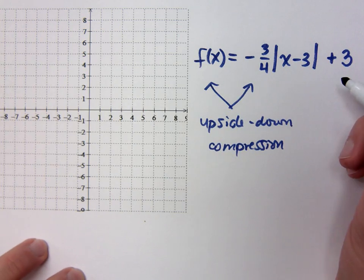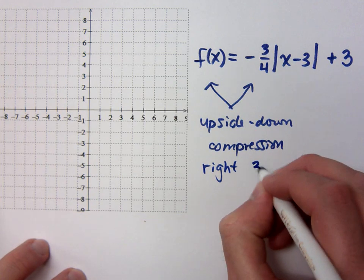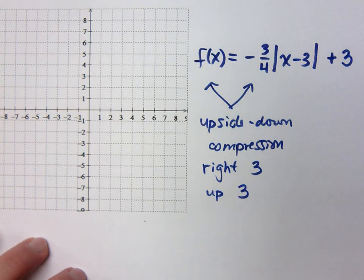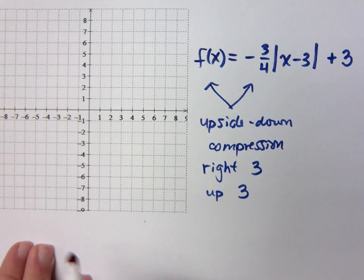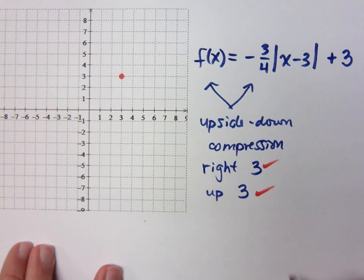What can you tell me about moving up, down, left, and right? Going to the right 3, and we're going up 3. So where is your vertex? Right 3, up 3. So done and done.